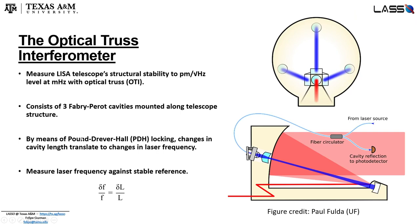The LISA Telescope is given a certain noise budget in terms of its structural displacement noise, and must meet the picometer per root hertz level in LISA's millihertz frequency band. One way to measure and verify this displacement noise is with an optical truss interferometer, or OTI.